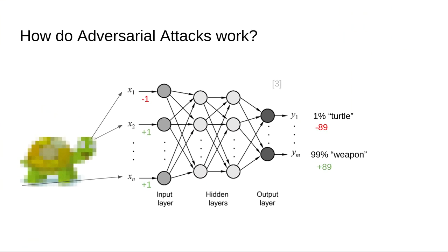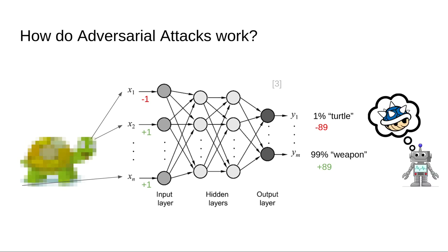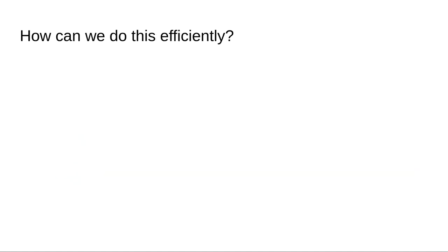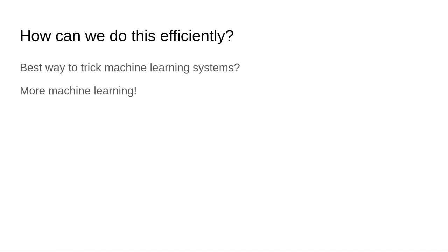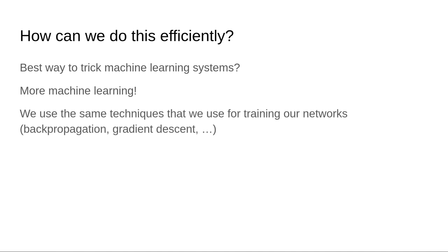Which is kind of scary, because the original image still looks the same and we don't really know why this is happening. Of course, the method we just used is really inconvenient and slow, so we want something faster. The best way of tricking a machine learning system is, of course, using more machine learning. We use exactly the same tools used for training networks — like backpropagation and gradient descent — to actually create those adversarial images.